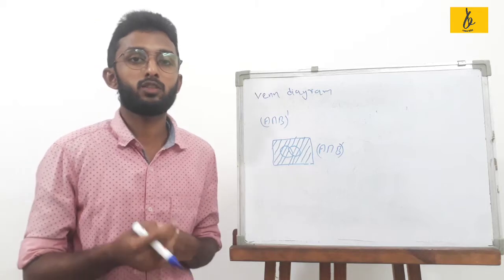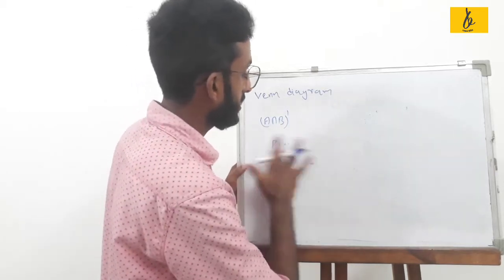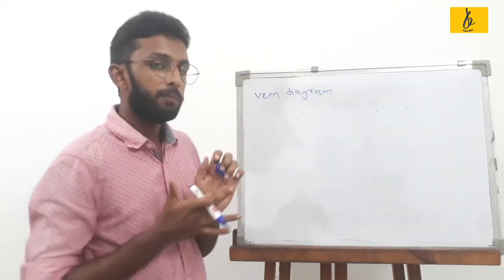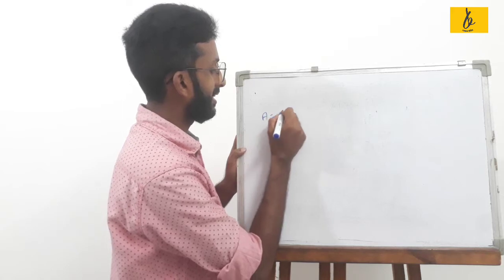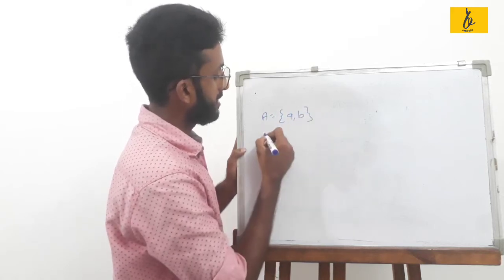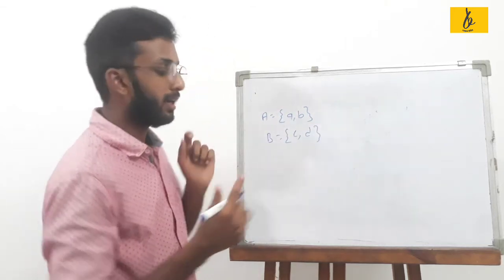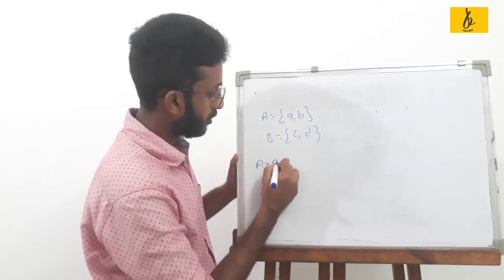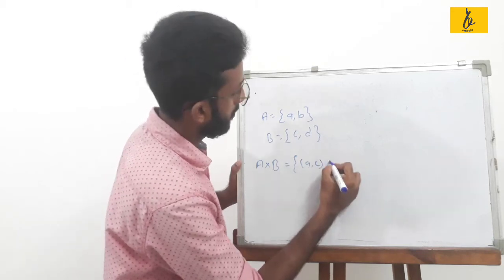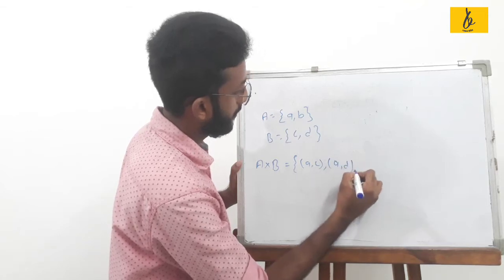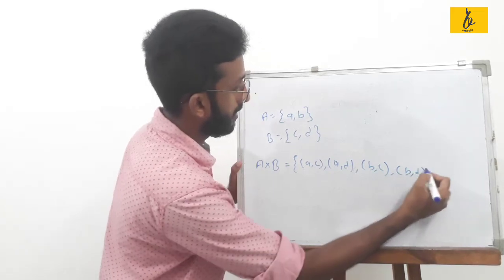Next, the Cartesian product or cross product of sets. You can simply think of it as multiplication of two sets. If set A has elements a and b, and set B has elements c and d, then the cross product or Cartesian product is equal to the set of ordered pairs: (a,c), (a,d), (b,c), (b,d).